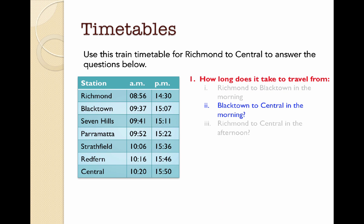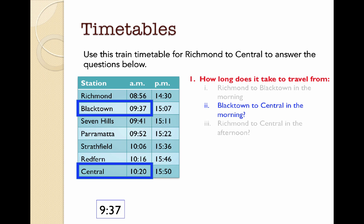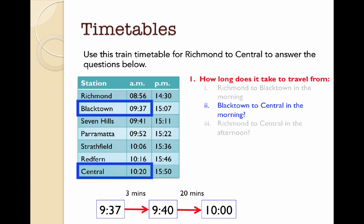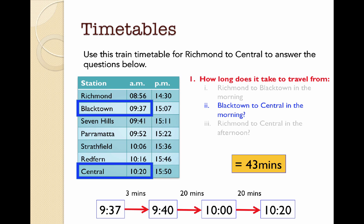Let's look at the second question using the same strategy. How long does it take to get from Blacktown to Central in the morning? We're starting at 9.37. I'm going to go to the nearest 10 minutes first — that's three minutes to get to 9.40. Then to the nearest hour, 10 o'clock, which takes 20 minutes. Then from 10 to 10.20, my finishing time, is another 20 minutes. Adding 3, 20, and 20 together gives me 43 minutes.